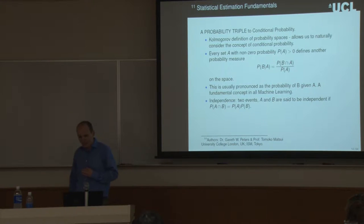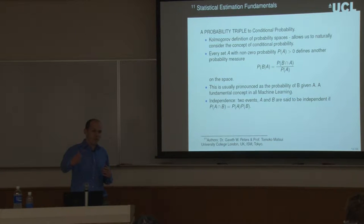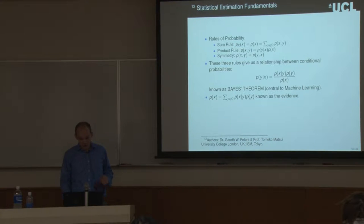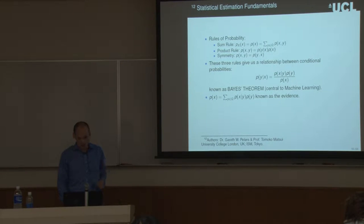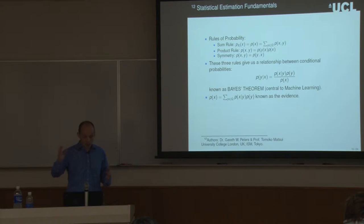Then we extended this idea of the probability triple to the notion of conditional probability, which is key to many of our applications, where we consider the probability of event B given that event A happens. This leads nicely to Bayes' theorem, which is central to all of machine learning and any kind of statistical analysis in a practical setting. We have the probability of Y given X equals the probability of X given Y, multiplied by probability of Y, normalized by the evidence, probability of X.